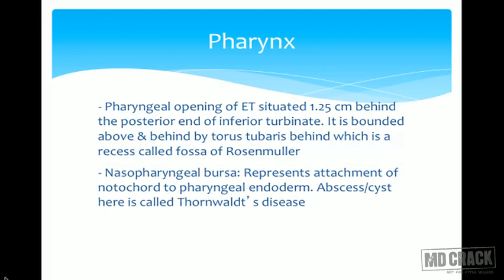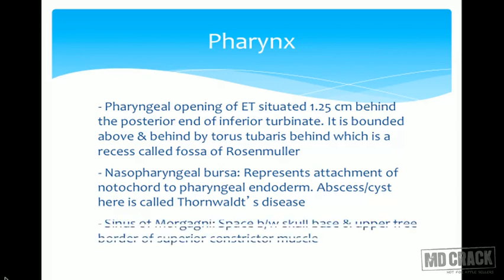The nasopharyngeal bursa represents the attachment of the notochord to the pharyngeal endoderm. An abscess or cyst here is known as Thornwaldt's disease — asked as an MCQ — or nasopharyngeal bursitis.